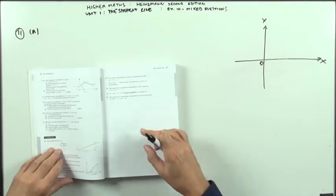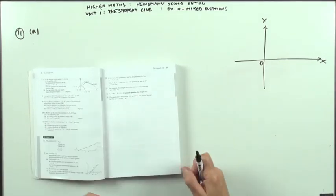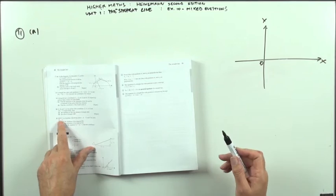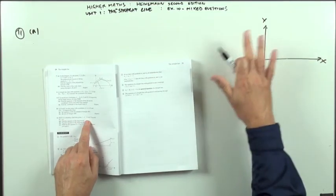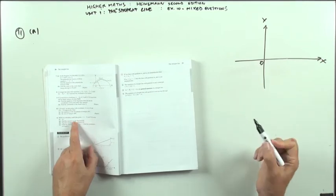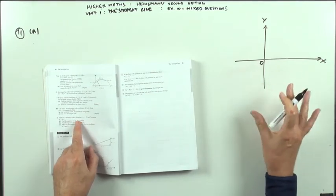So, Heinemann Heyer, exercise 1-0 on the straight line, last question, number 11. R, S, T, U is a rhombus, and it gives you a couple of coordinates. Again, there's no diagram. Draw your own diagram so it helps you visualize it. Just approximate, because you can't read anything from it.